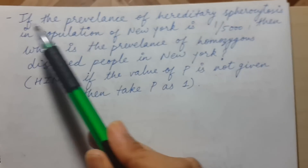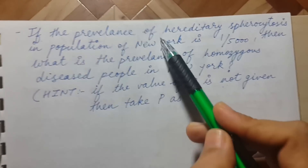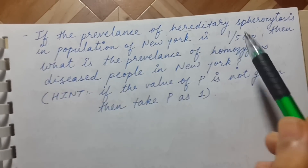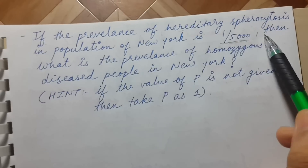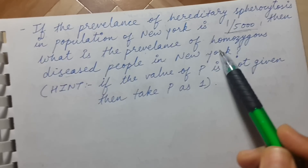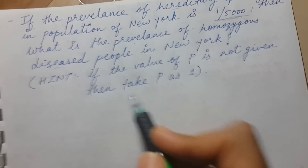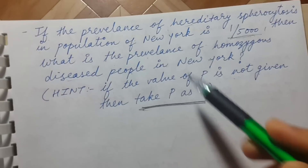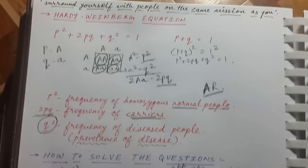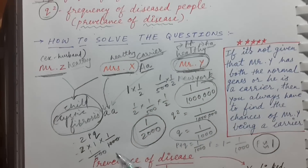So if you have understood this, let me show you a practice question — write the answer in the comment box. If the prevalence of hereditary spherocytosis in the population of New York is 1/5,000, what is the prevalence of homozygous diseased people in New York? Hint: if the value of p is not given, take p = 1. Try to find the answer and write it in the comment box. This was all about the Hardy-Weinberg equation — I tried to simplify it, and if you remember this whole vignette, you can solve most questions on Step 1.